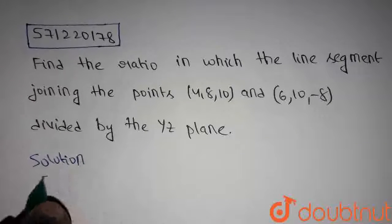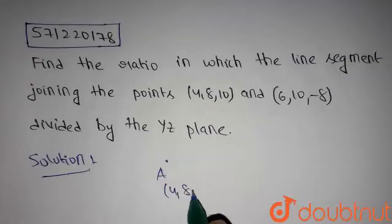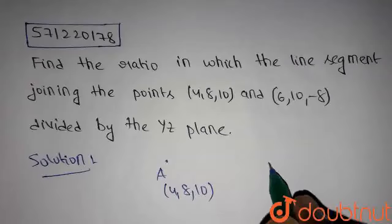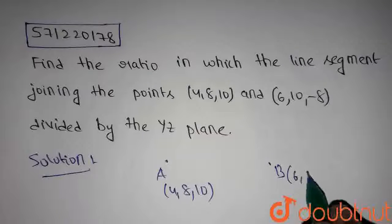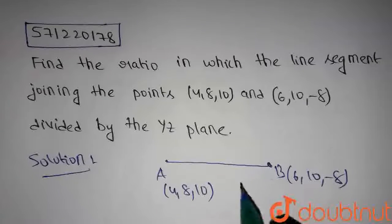Let's get into the solution. Let's consider point A as (4, 8, 10) and point B as (6, 10, -8), and there is a line segment joining both points A and B.